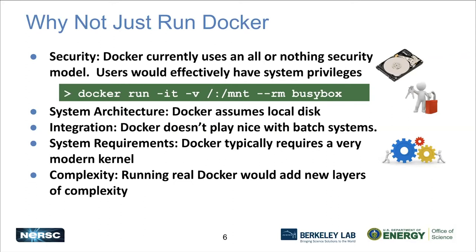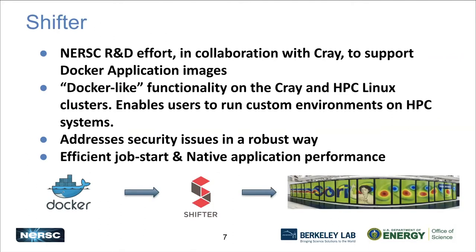For these reasons, NERSC developed Shifter. It's an example of an HPC runtime and was actually one of the first to be developed — we wrote it back in around 2015. What we wanted to do is leverage as much of the Docker ecosystem as we could, including all the build tools and image repositories, but just replace the runtime piece to make it more amenable to HPC systems. We really wanted to address these security issues but also thought about scaling and performance.